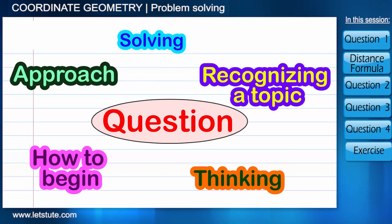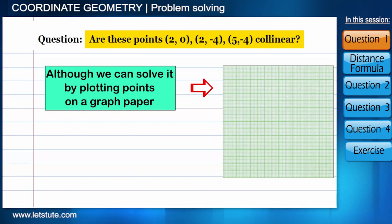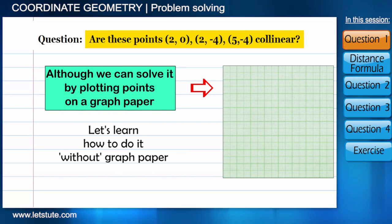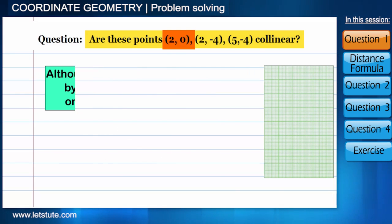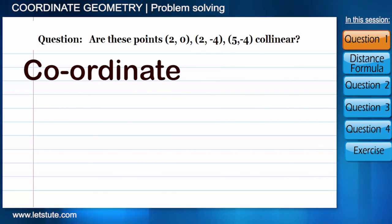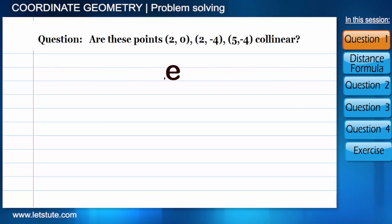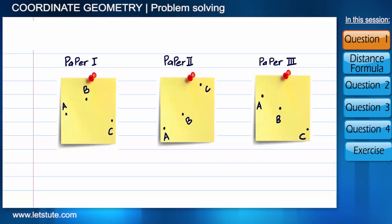Let's start. The question is: are these points collinear? Three points are given in terms of coordinates, which means it's a question of coordinate geometry. We'll discuss the topic later, but for now just assume three dots are on a paper.